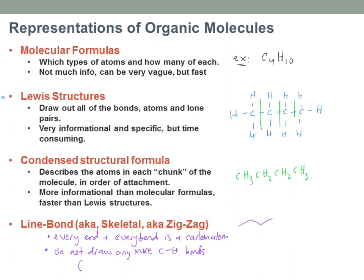This does not mean that you skip OH bonds, NH bonds, or anything other than carbon. Do draw OH bonds, NH bonds, SH bonds — anything on a hydrogen that is not on a carbon. It's just the CH bonds that we tend not to draw. So this zigzag again means CH3-CH2-CH2-CH3.